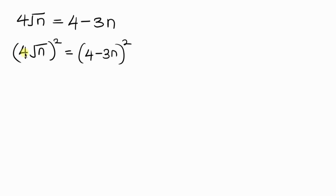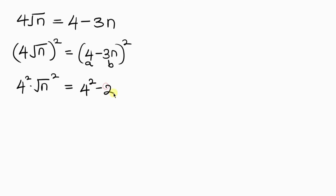Expanding the left: 4 squared times the square root of n squared. For the right hand side, using the same formula, 4 represents a and 3n represents b. So this is a squared — that is 4 squared — minus 2 times a (which is 4) times b (which is 3n), plus b squared, which is 3n squared.